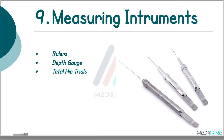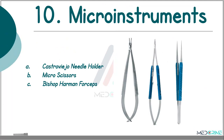Then we have measuring instruments. In surgery you need to measure either volumes or depth. For example, when carrying out total hip replacement or orthopedic surgeries, we use a depth gauge, total hip trials and also rulers. In surgery we estimate the size — either depth, length or width.